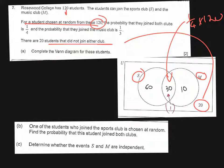And what else are we told? The probability that they join the music club is one third. So music club in total is going to be one third times 120 which is going to give you 40. Because we've already got 30 in here, the remaining 10 must go in here.